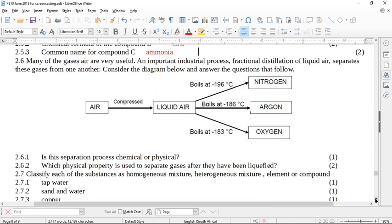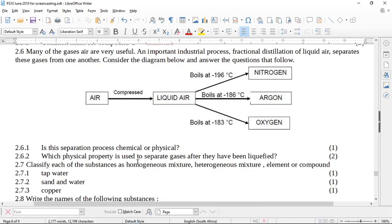Now it says to you, many of the gases in air are very useful. An important industrial process, fractional distillation of liquid air, separates these gases from one another. Consider the diagram below and answer the questions that follow. So we take air, we compress it. It goes from a gas to a liquid. And then there are these three arrows showing you when the air, the liquid air boils: the nitrogen boils at minus 196, the argon boils at minus 186, and the oxygen boils at minus 183.